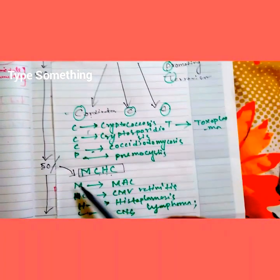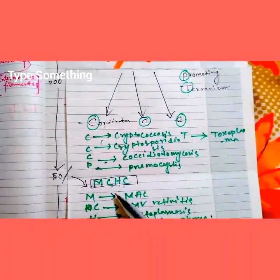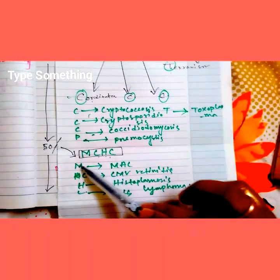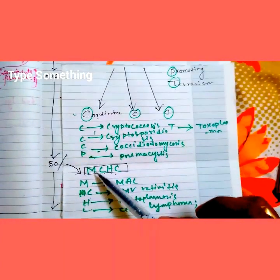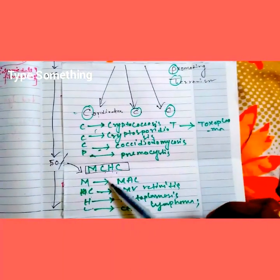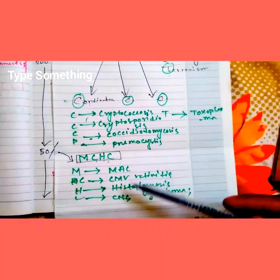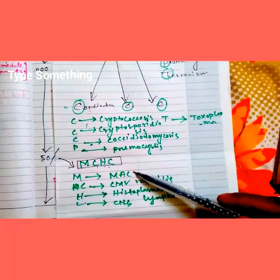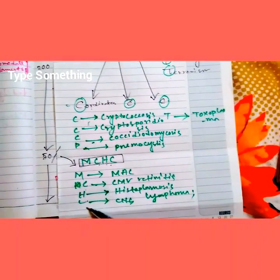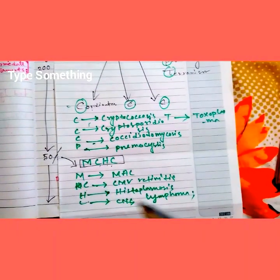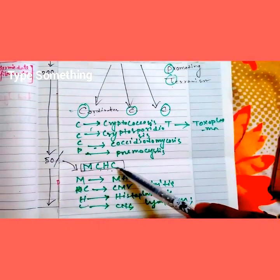Below a CD4 count of 50, we use the simple mnemonic MCHC — not mean corpuscular hemoglobin concentration, but: M for MAC (Mycobacterium avium complex), C for CMV retinitis, H for histoplasmosis, and C again for CNS lymphoma. So MCHC is the mnemonic for infections below CD4 count of 50.